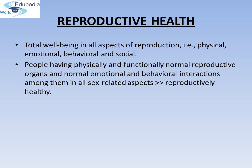What is reproductive health? According to the World Health Organization (WHO), reproductive health means a total well-being in all aspects of reproduction — i.e. physical, emotional, behavioral and social. Therefore, a society with people having physically and functionally normal reproductive organs and normal emotional and behavioral interactions among them in all sex-related aspects might be called a reproductively healthy population.